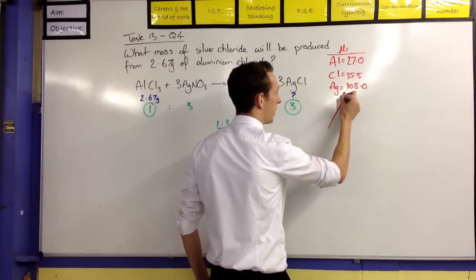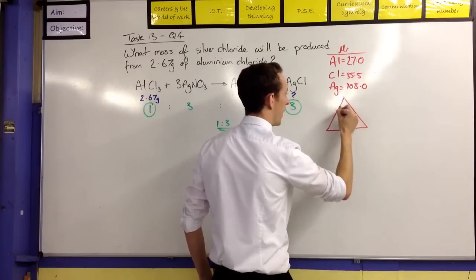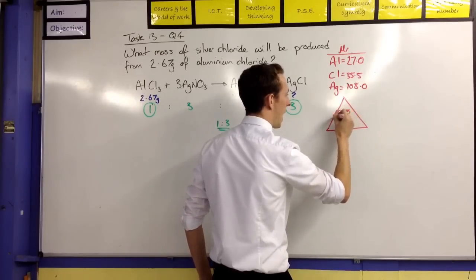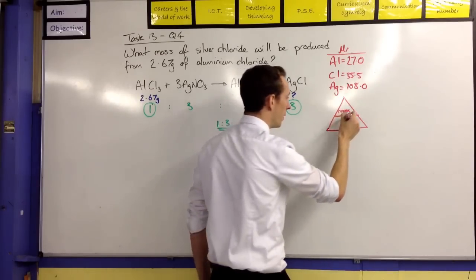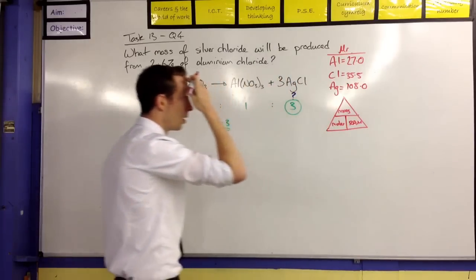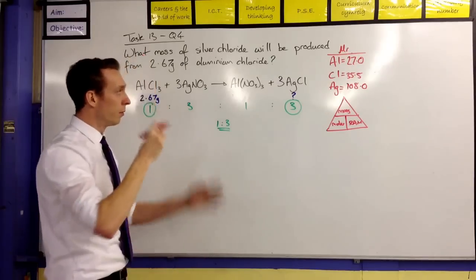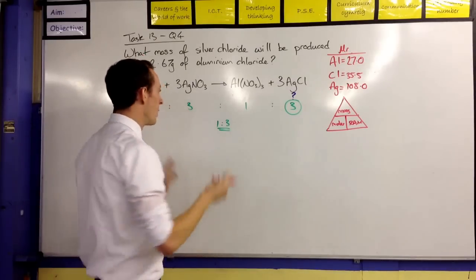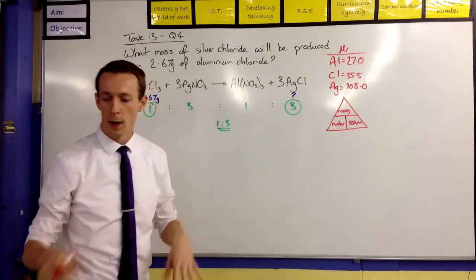So we've got mass on the top and we've got the animals on the bottom. So we've got the moles and the RAM on the bottom. So, okay, so we can start now. We've got our basis. We can start now to figure out this question. We're going to work through it.